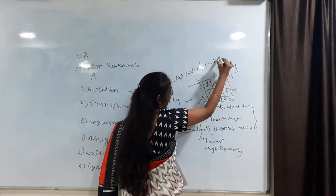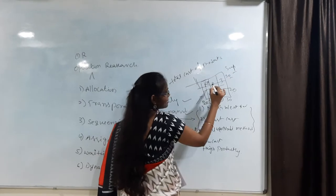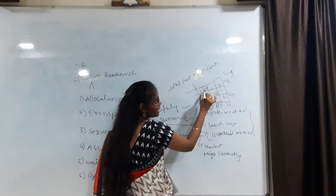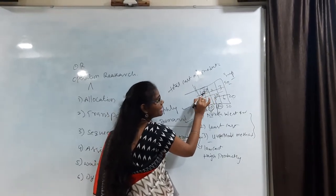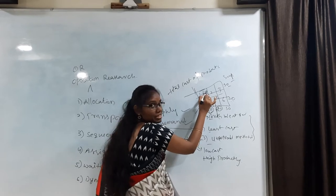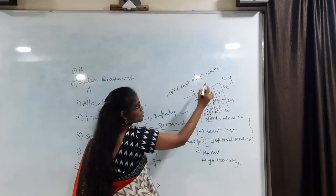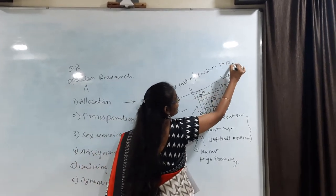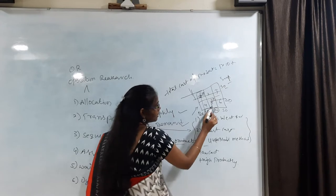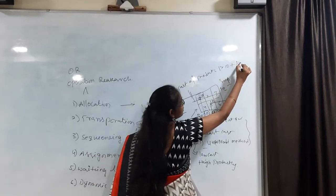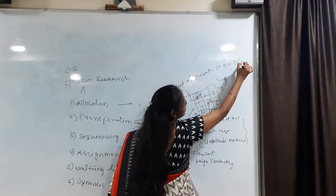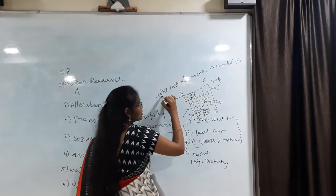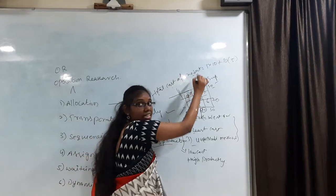The allocation of the cell gives the cost of the product. For example, 1 multiplied by 10, plus 5 multiplied by 10 — this gives the total cost of the product using the North West Corner method.